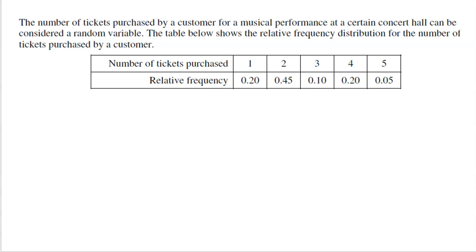The number of tickets purchased by a customer for a musical performance at a certain concert hall can be considered a random variable. The table below shows the relative frequency distribution for the number of tickets purchased by a customer. Let's give this random variable a letter, T for tickets purchased. This is discrete because the number of tickets purchased is a whole number and it's listable: one, two, three, four, five.